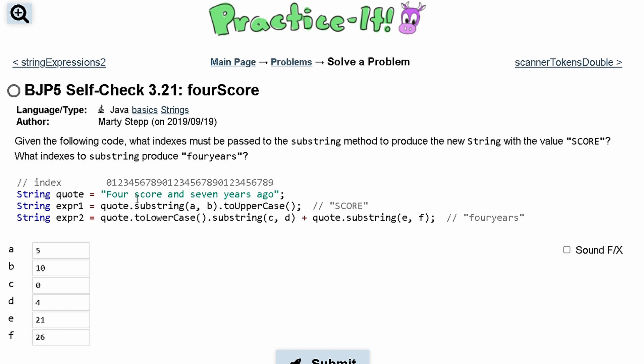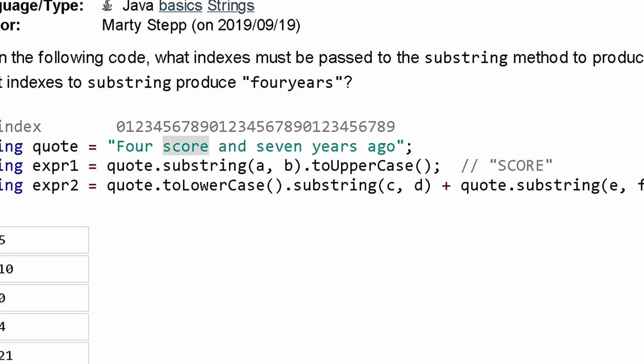seven years ago. We have score right here, so we are going to have to count the indexes of zero one two three four five. We can see score starts at five, so we're going to print out five.